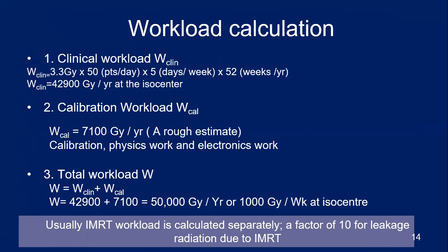When doing IMRT, even though you deliver the same dose of 3.3 gray, the beam-on time is much higher. Therefore, the leakage radiation from the head will be much higher, and hence a factor of 10 has been recommended for the leakage radiation calculation in IMRT.